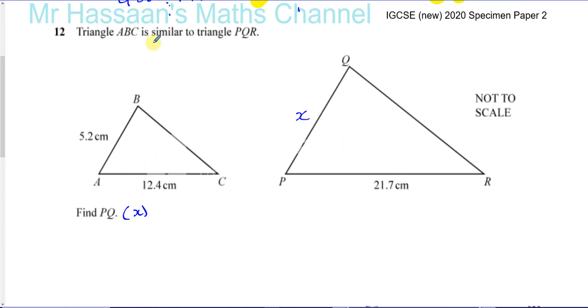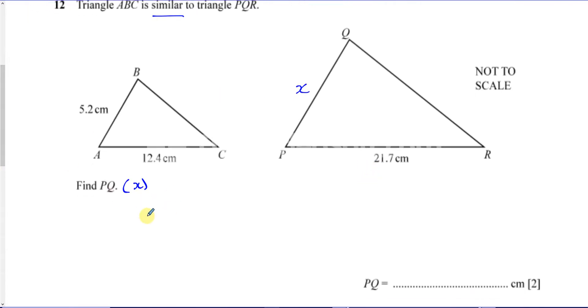Now we're told that they are similar triangles, so the ratio of the corresponding sides are the same. There's lots of ways of doing this question. Probably what you're most used to is to say, OK, if I divide X by 5.2, I'm going to get the same ratio as dividing 21.7 over 12.4. And then you can just rearrange that equation.